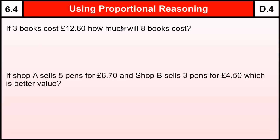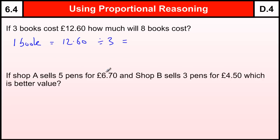Three books cost £12.60 — how much will eight books cost? The basic core idea behind this is working out what one thing costs, in this case one book. So one book is going to be £12.60 divided by three. Three goes into £12 — the £12 is split into £4, and the 60p will be 20p — so each book costs £4.20.